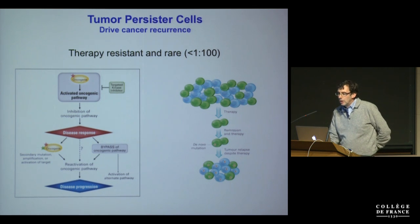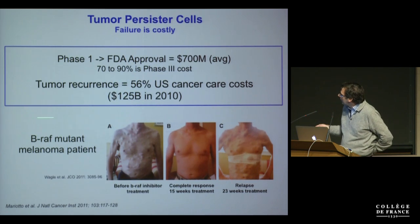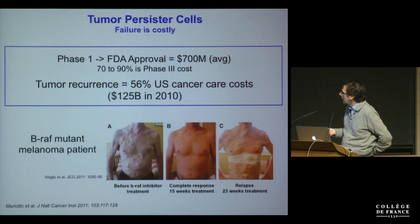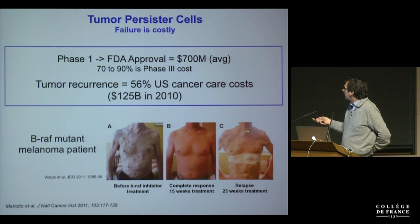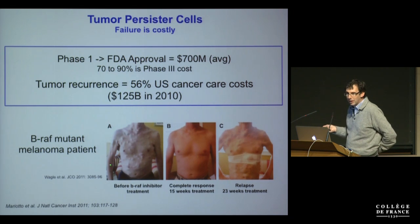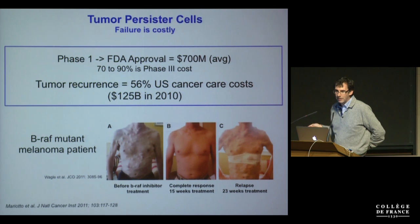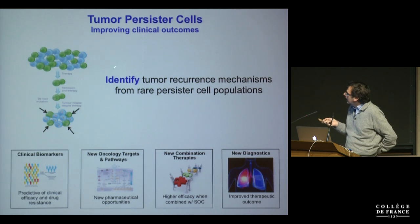We're particularly interested in using this capacity to look at tumor persister cells — rare therapy-resistant cells which are known to drive cancer recurrence. Here is an illustration: a patient with fairly advanced melanoma was treated with a BRAF inhibitor and after 15 weeks looks perfectly normal. But 23 weeks later he has relapsed and the nodules have grown again in exactly the same places as the original ones. This means that even though he appeared cured, in every one of those nodules there were at least one or two cells that survived the treatment. Single-cell analysis techniques could be a very powerful way to identify tumor resistance mechanisms from rare persistent cells.